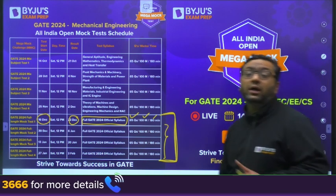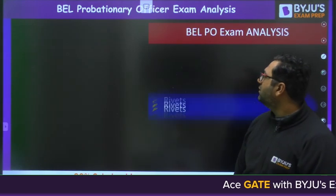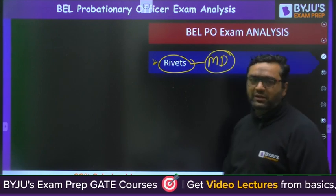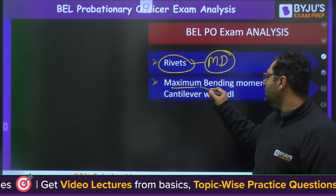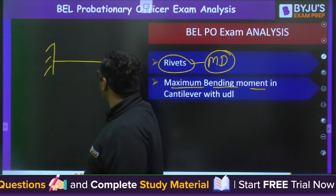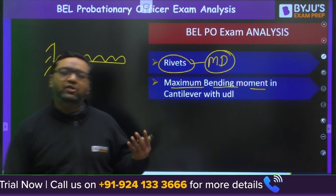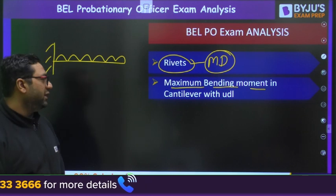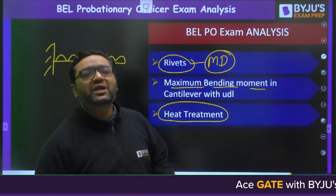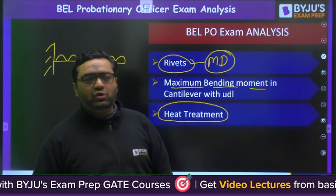You can download the app — the link is in the description. A question was there from rivets, which is once again from machine design. Then a question on maximum bending moment: for a cantilever beam with UDL loading, they asked where the bending moment will be maximum — an easy question from strength of materials. From heat treatment, they asked in which process stress relieving occurs — stress is relieved in the annealing process.